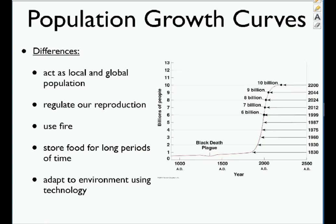They're hoping the human population will level off at the carrying capacity, estimated around 10 billion, though nobody really knows what our carrying capacity is. Humans are unique: we can regulate reproduction, use fire, store food long-term with refrigerators and pantries, and adapt to environments using technology — from near the equator to Antarctic base stations.